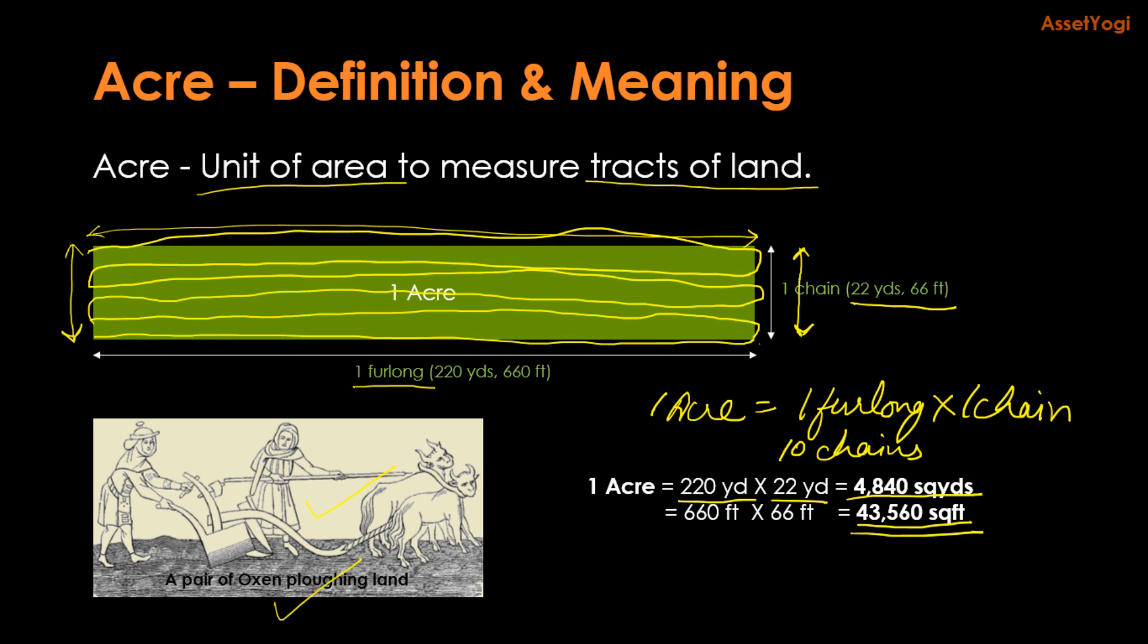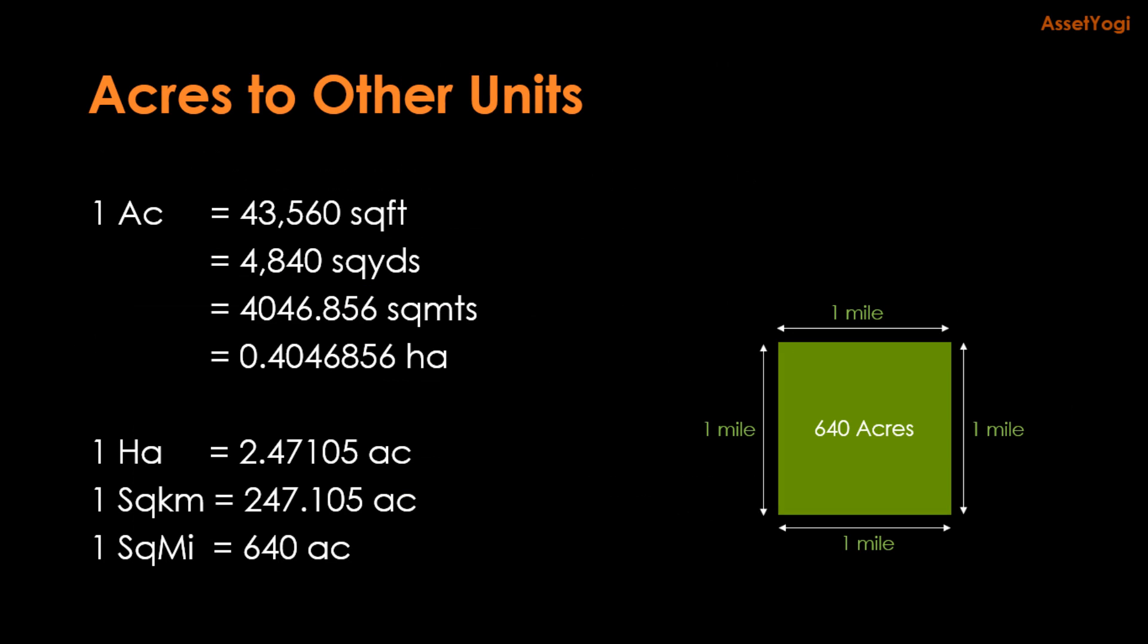Now that you have got the historical context on acre, let us now see how an acre compares with other land measuring units. We have already seen that one acre is equal to 43,560 square feet and 4,840 square yards. In square meters, it is about 4,047 square meters. And if you have to convert it into hectare, then one acre is about 40% of a hectare. Hectare is a metric unit which is also used to measure big parcels of land.